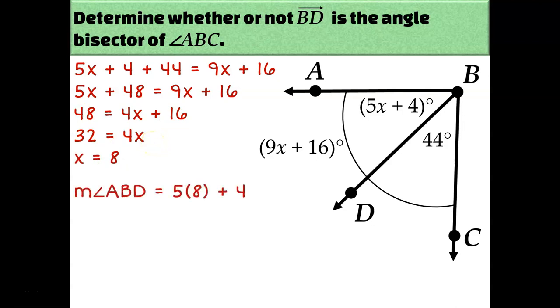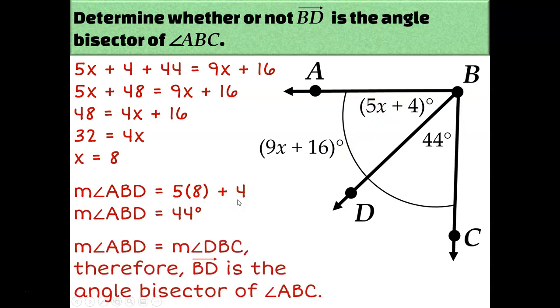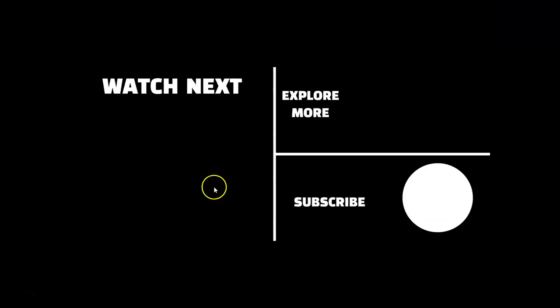So like what we saw before, if I plug 8 into 5x plus 4, I get ABD being equal to 44 degrees. Therefore, like we said on the previous method of solving, Ray BD is the angle bisector of angle ABC. So that's all you need to know about angle bisectors. In our next lesson, we're going to be exploring some more angle pairs.